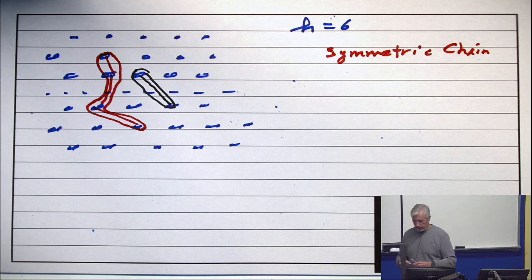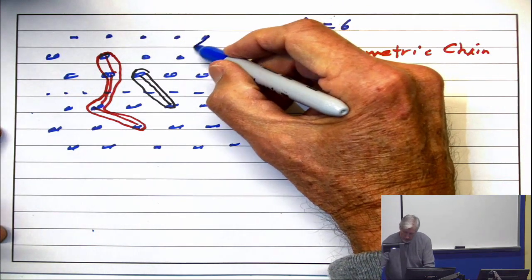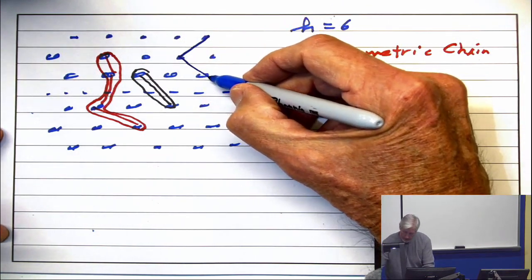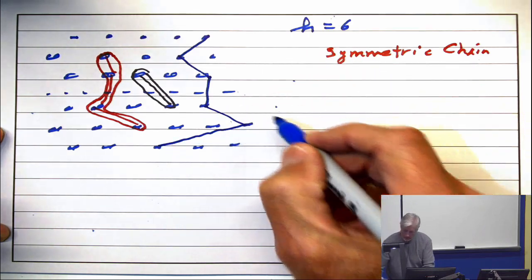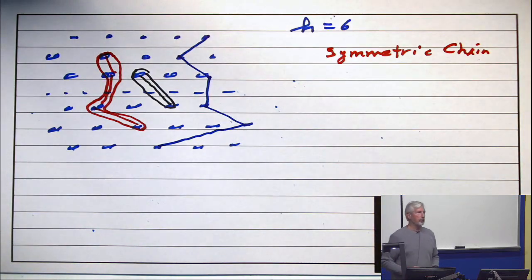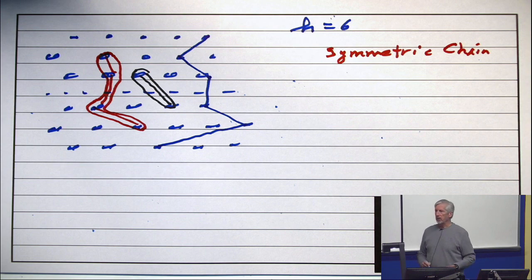And of course, you can have a symmetric chain that goes from the entire top to bottom, like this. So there's a symmetric chain which goes three levels above and three levels below. Is the notion of a symmetric chain clear?